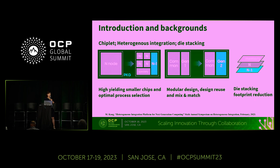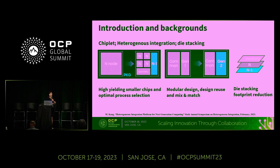Advanced packaging can enable chiplet heterogeneous integration and also enable die stacking. It can make high-yielding small chips and then integrate them together, allowing you to choose optimized process selection. It could also enable modular design, design reuse, and mix-and-match. Die stacking in advanced packaging techniques could dramatically reduce the device footprint.